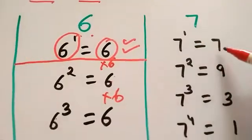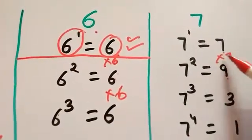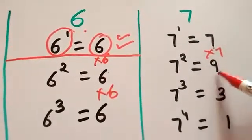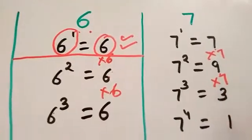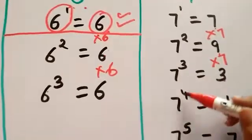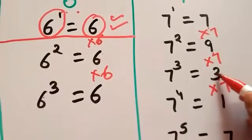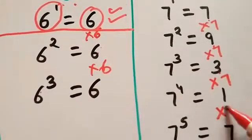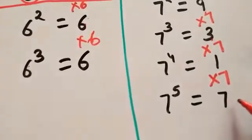Now check for 7. 7 raised to the power 1 is 7. 7 raised to the power 2: 7 into 7 is 49, unit digit 9. 7 raised to the power 3: 9 into 7 is 63, unit digit 3. 7 raised to the power 4: 3 into 7 is 21, unit digit 1.